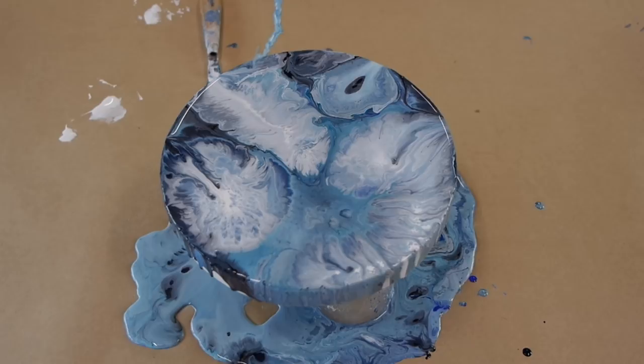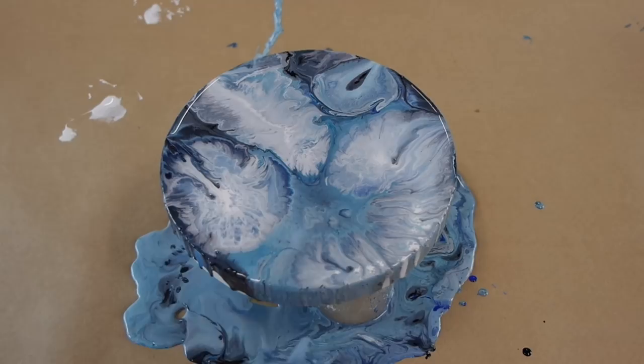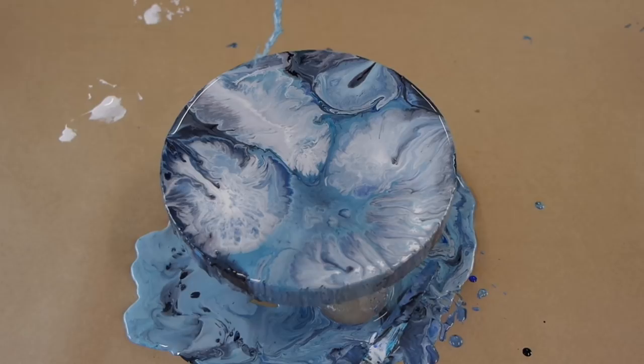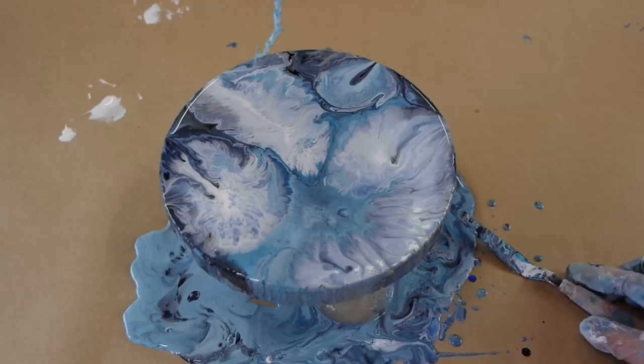Once you're happy with how your artwork is starting to form, I just like to go around the sides and pick up the excess of the acrylic paint and just make sure all the sides are nice and covered. You can then also underneath your artwork just scrape along the bottom just to make sure there's no drips on the underside of the piece.